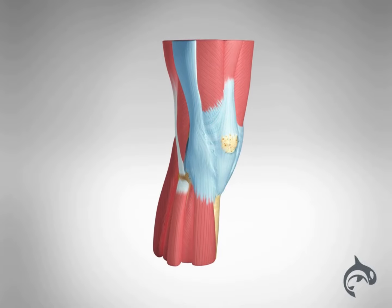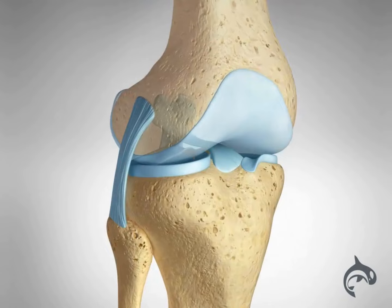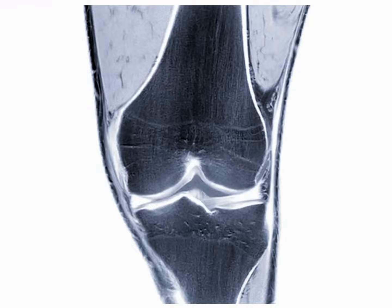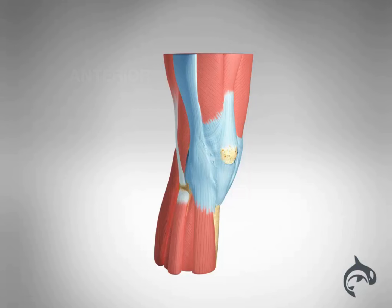The knee is a complex joint that relies on four main ligaments to provide stability and support. An injury to any one or combination of ligaments requires expert diagnosis and care. Understanding which ligaments are affected, along with the degree of injury, will determine the best treatment plan for recovery.